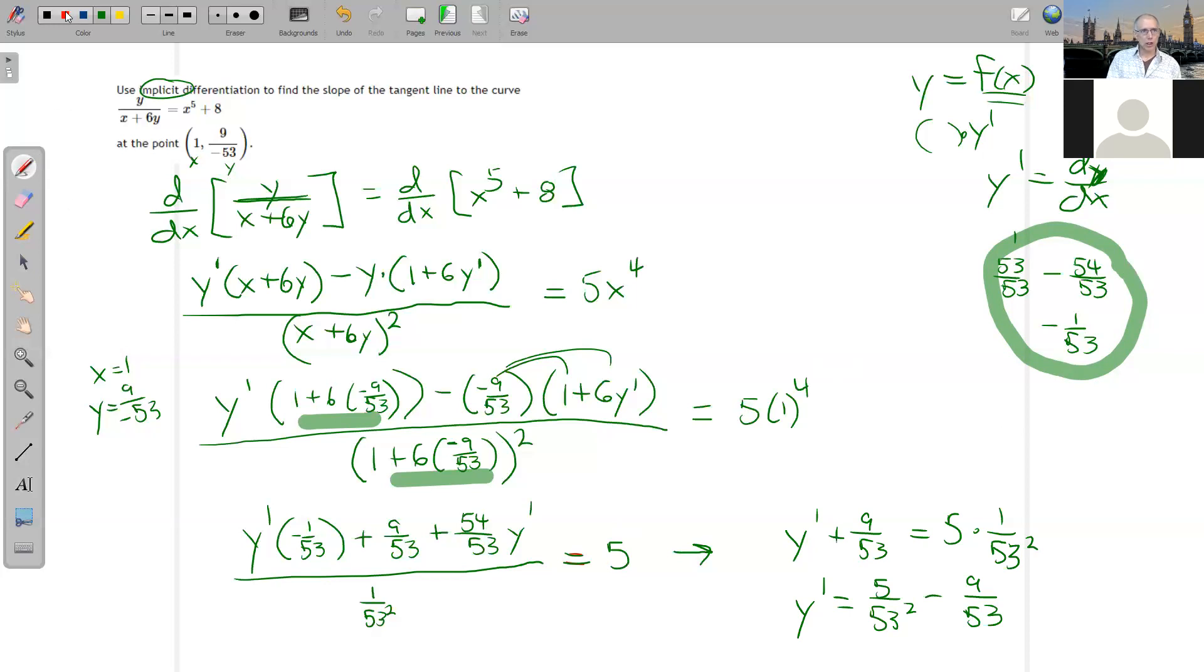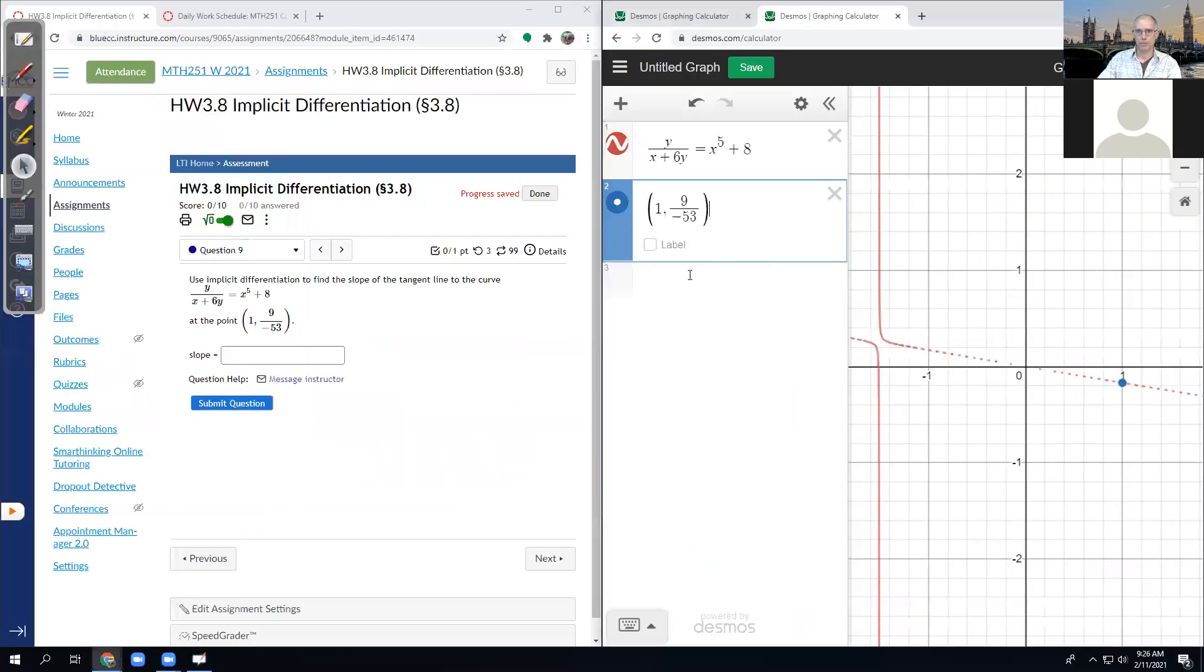So common denominator would be 53 squared. So I'm going to multiply top and bottom by 53. So I need to know what is 5 minus 9 times 53. 5 minus 9 times 53 is negative 472. So that's my numerator. Negative 472 divided by 53 squared. I'm going to leave it as 53 squared. So that I believe is my slope.